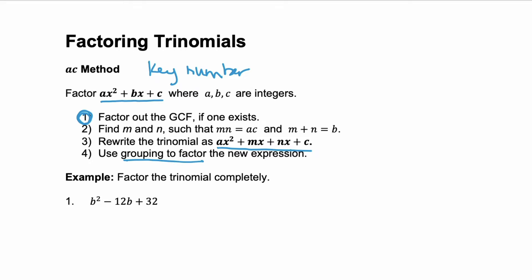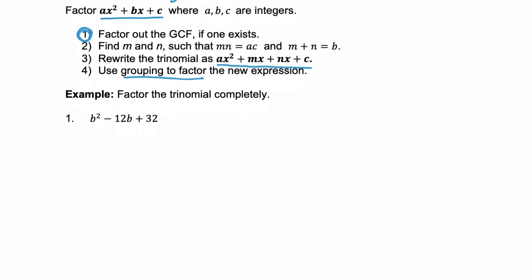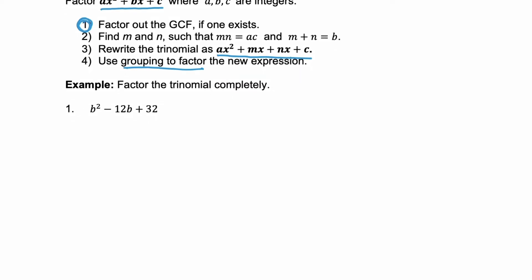Example number one: we have b squared minus 12b plus 32. First step — do we have a GCF? No, there's no GCF. Our leading coefficient is one, so there's no GCF here. Next, do the key number method: take a times c. a is your leading coefficient, which is one, and c is your constant, which is 32. One times 32 is 32. And then we take the value for b, which is the coefficient of that middle term: negative 12.